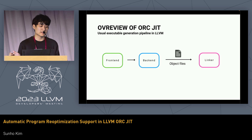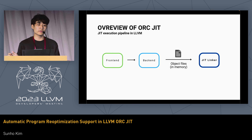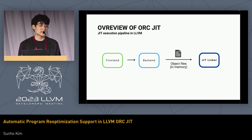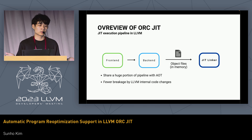How ORC JIT makes this different is that we swap the last step. Instead of dumping object files into the file system, we dump them into memory. And instead of a linker, we have a g-linker which links the object files in memory into executable form, still inside memory. The benefit of this approach is that it shares a huge portion of the pipeline with the ahead-of-time workflow, and there are fewer breakages caused by LLVM internal code changes because the object file format is relatively standardized.